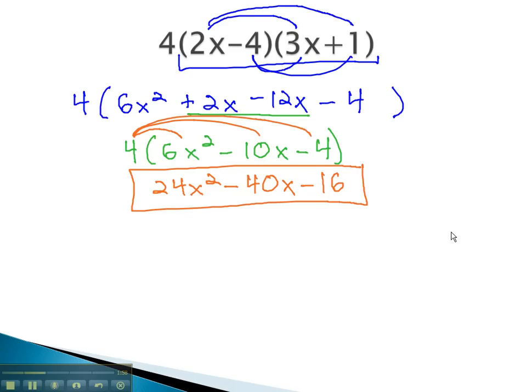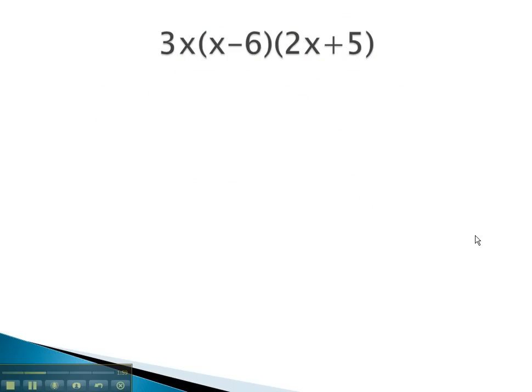Let's try one more example where we do just that. Again, in this problem, we will multiply the binomials first, keeping the 3x in front of everything.